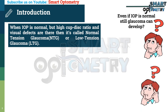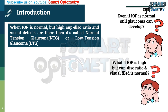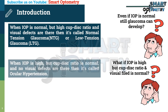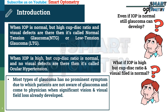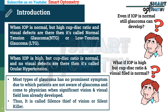Again you might be thinking: what if IOP is high but cup-disc ratio and visual field are normal? When IOP is high but cup-disc ratio is normal and no visual defects are present, it is called ocular hypertension. Most types of Glaucoma have no prominent symptoms, so patients are unaware and present to the physician only when significant vision and visual field loss has already developed. Thus it is called the Silent Thief of Vision or Silent Killer.